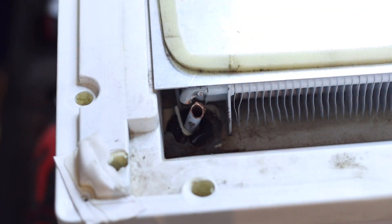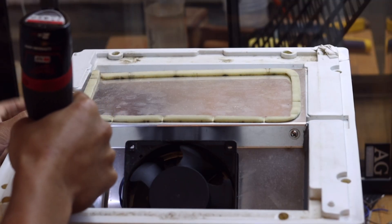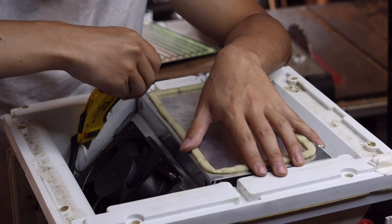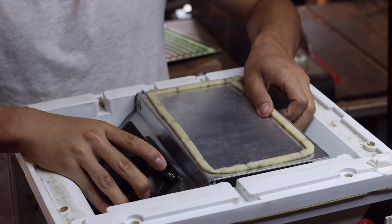Within this section of the fridge base is where the cooling normally happens. To convert it into an incubator, I'll need to replace the cooling component with my own heating element.